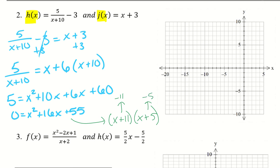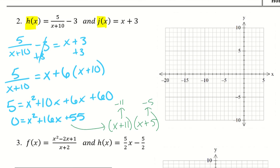Now that I know my x values, I can find my y values. Using j(x) equals x plus 3: negative 11 plus 3 gives negative 8, and negative 5 plus 3 gives negative 2. So our two coordinate points are (negative 11, negative 8) and (negative 5, negative 2).